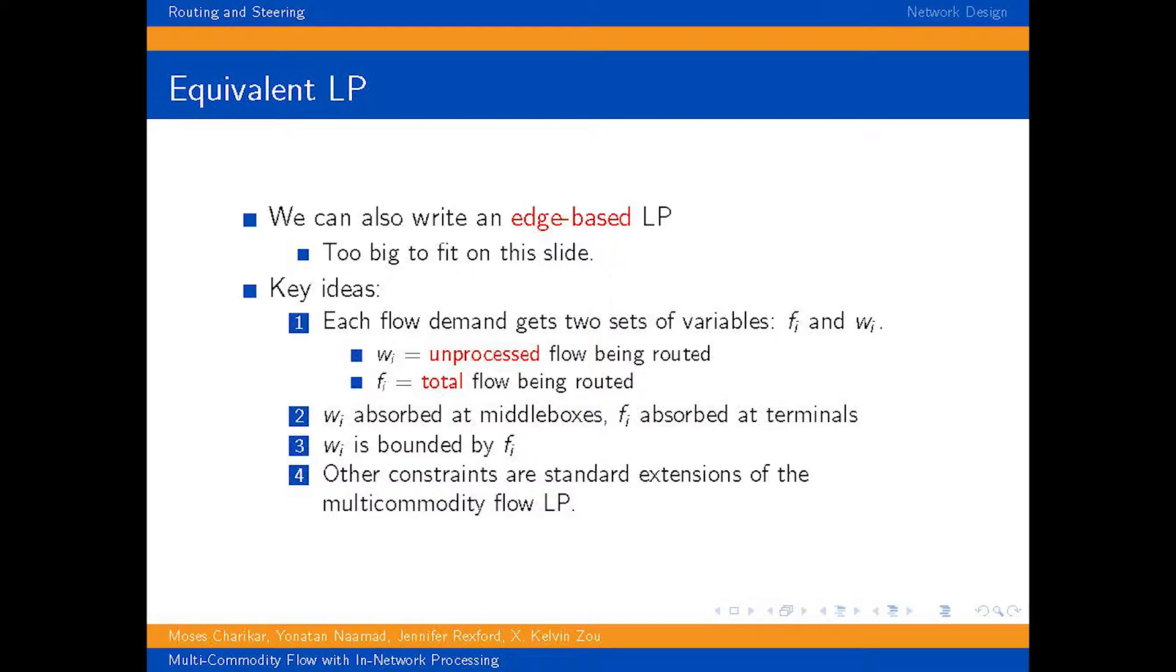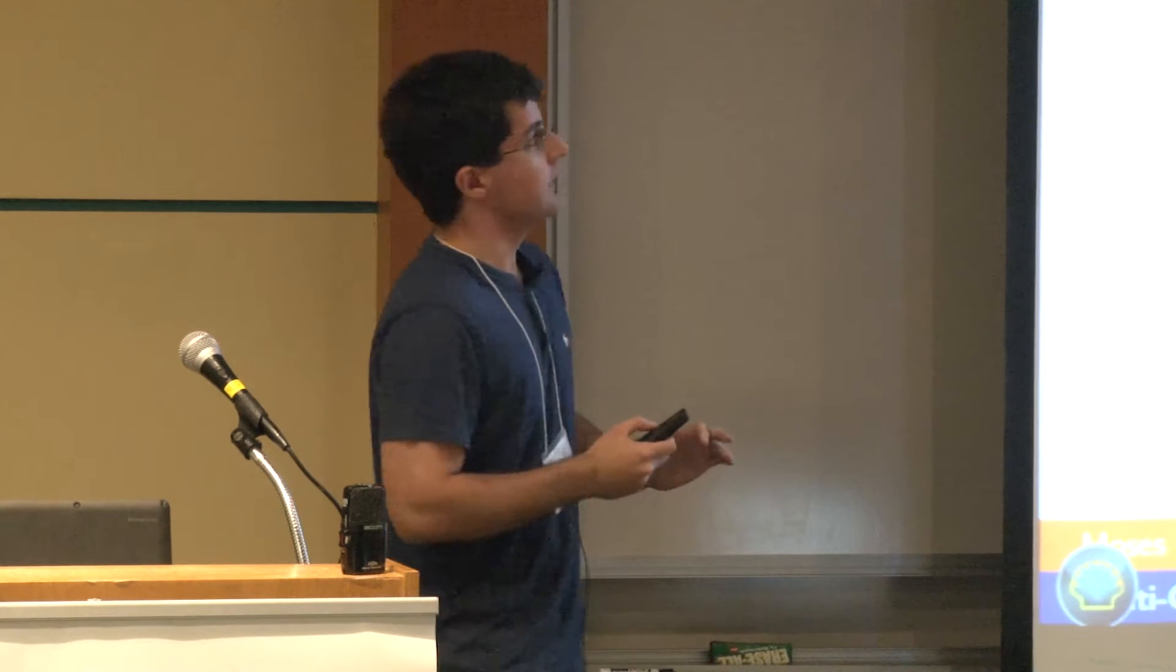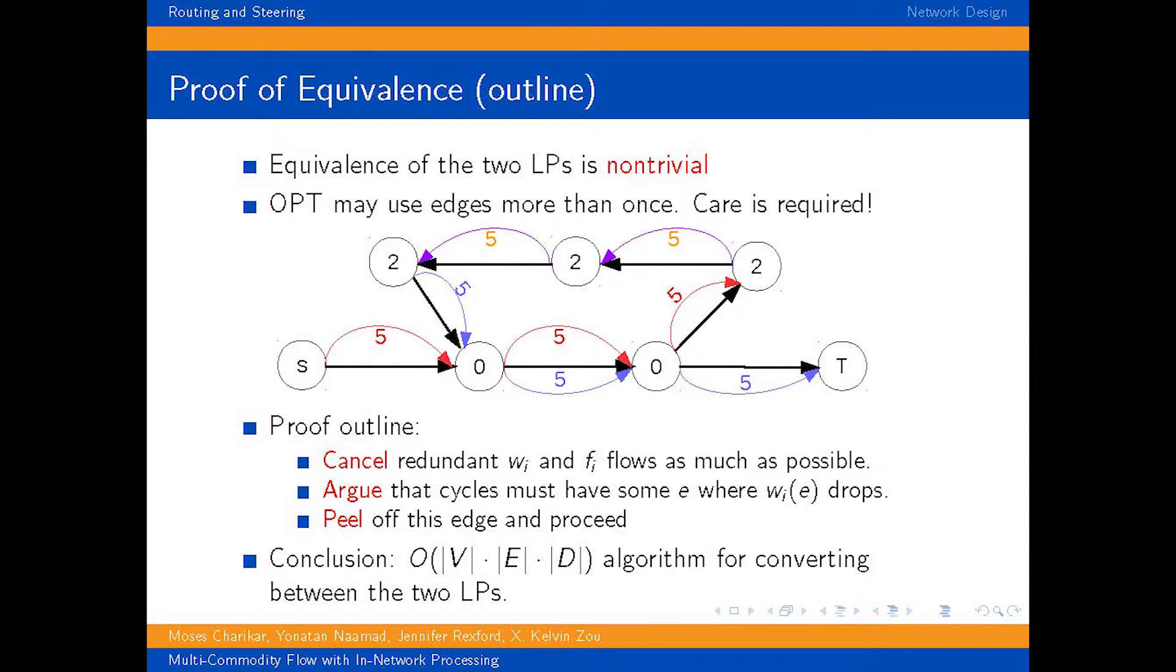Then you add a bunch of constraints that basically ensure that things work as they should. So you shouldn't have more unprocessed flow than you have total flow, things along those lines. And then you have more or less reasonable other constraints. Most of them are the same ones that you'd see for multi-commodity flow. So there's nothing too complicated here. The actual complicated part is the analysis of this LP.